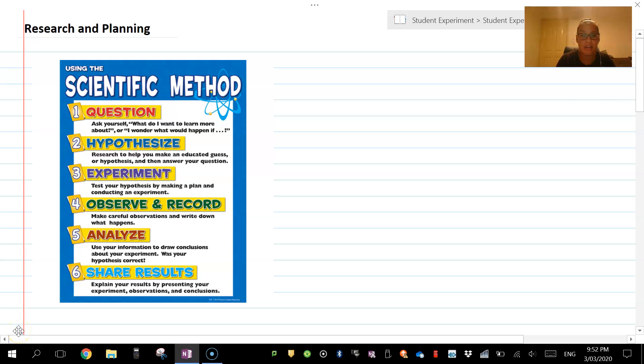We're looking at researching and planning here. What you would have done with your experience is considering what is the importance of this, or what would I want to learn more about if I change this experiment? Or I wonder what would happen if we did this instead? That is what we're going to be looking at with our student experiment.